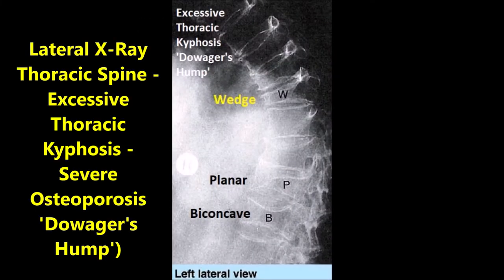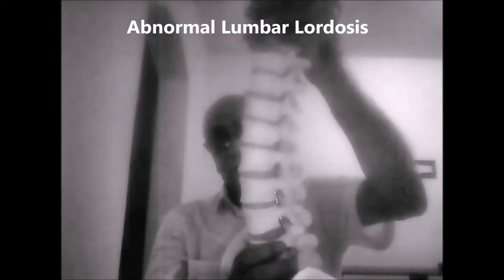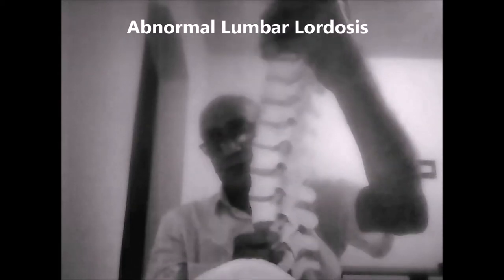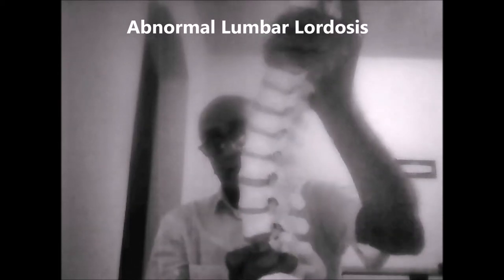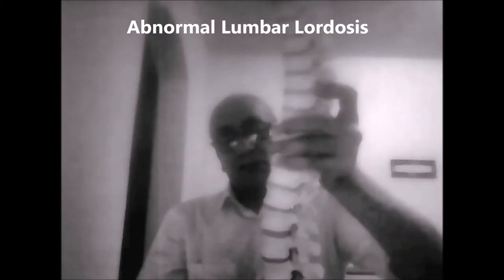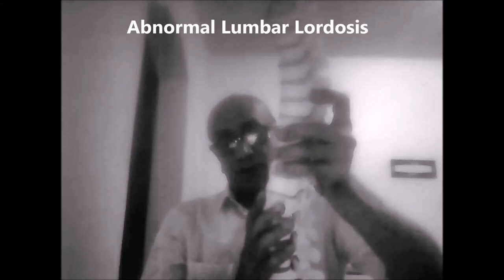This is a lateral x-ray showing extreme thoracic kyphosis caused by excessive osteoporosis of the thoracic vertebrae. The other abnormality is abnormal lumbar lordosis, where the lumbar spine gets bent excessively backwards. The lumbar lordosis and thoracic kyphosis are normally slightly curved — called normal — but when it becomes excessive it's called abnormal.